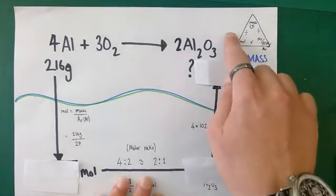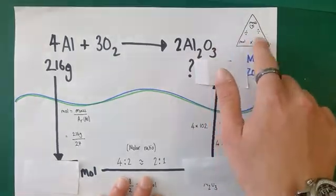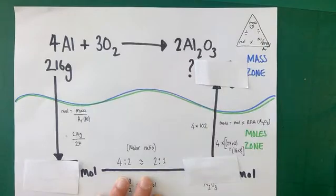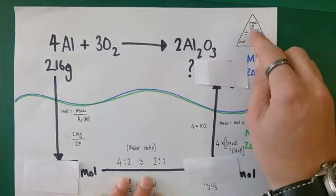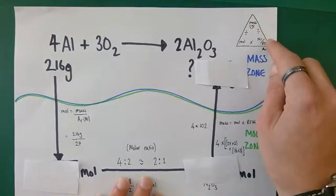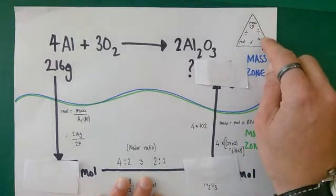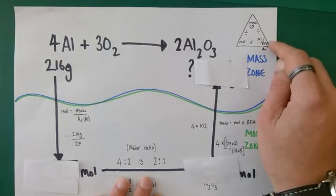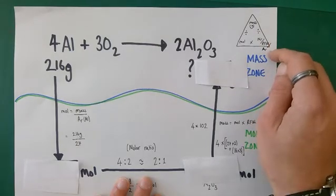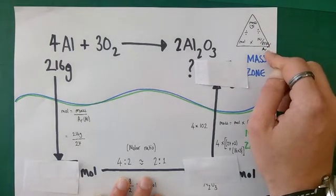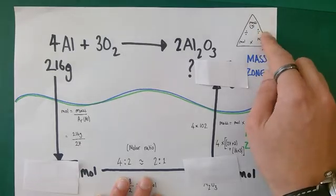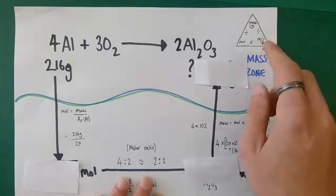Write in the corner of your page your formula triangle for mass-to-mole or mole-to-mass conversions. Moles equals mass divided by the molecular mass — the relative formula mass of a compound, or the relative atomic mass of an element, whichever one you're dealing with.